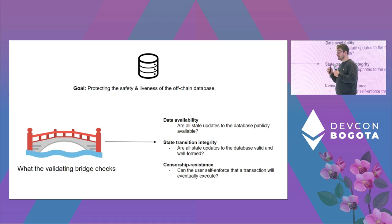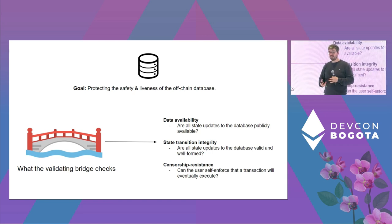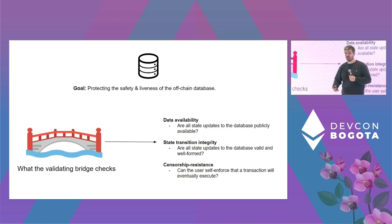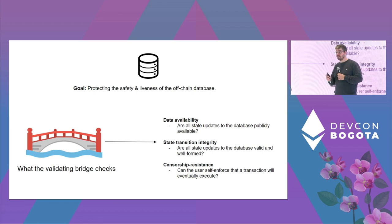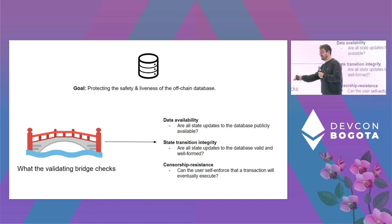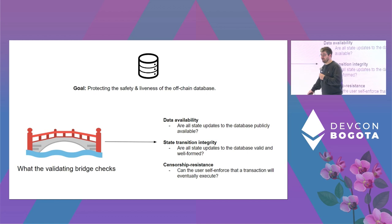The three sub-goals are: first, data availability — can anyone get a copy of the data? Second, state transition integrity — are all proposed updates to the database valid and correct? Third, censorship resistance — if the entire system goes offline, can the bridge independently, forcefully order and eventually execute transactions so users can unwind their position and withdraw their funds?